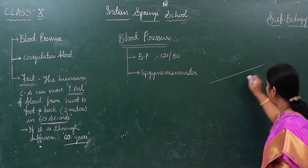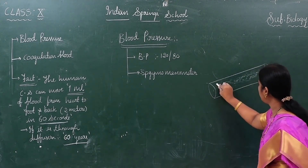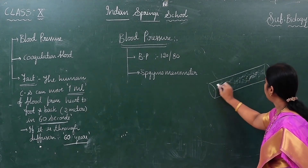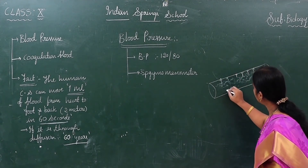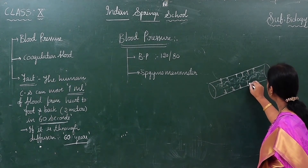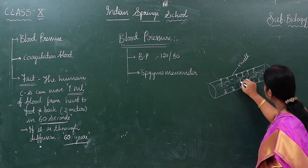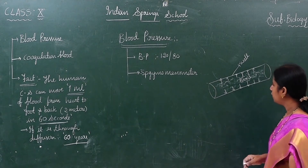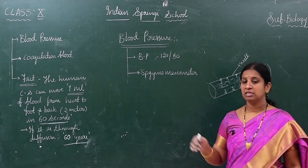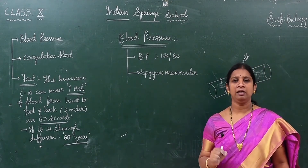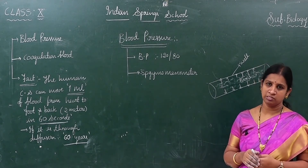So what is blood pressure? When blood flows inside a blood vessel, it exerts some pressure on the walls of the blood vessel. That pressure is called blood pressure. This pressure is compulsorily required to flow the blood in the blood vessels.